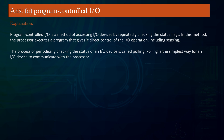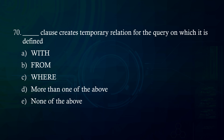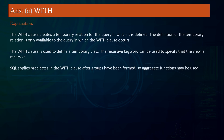The dash clause creates a temporary relation for the query on which it is defined. A. With B. From C. Where D. More than one of the above E. None of the above. Answer: With. Explanation: The WITH clause creates a temporary relation for the query in which it is defined. The definition of the temporary relation is only available to the query in which the WITH clause occurs. The WITH clause is used to define a temporary view, and the recursive keyword can be used to specify a recursive view. SQL applies predicates in the WITH clause after groups have been formed, so aggregate functions may be used.